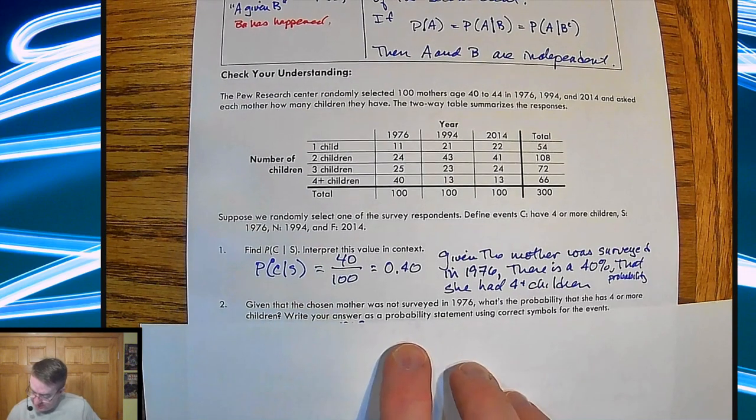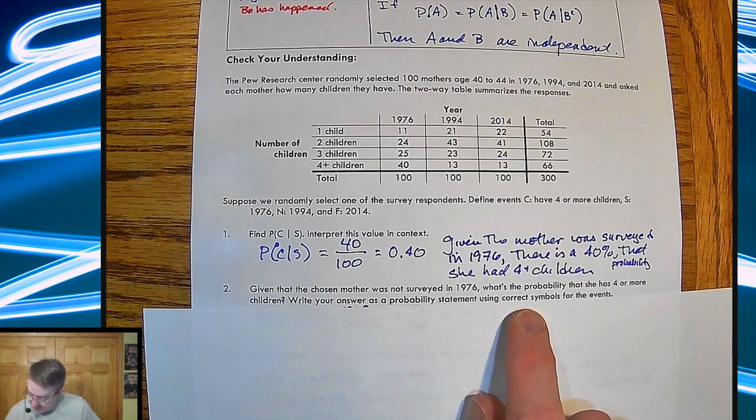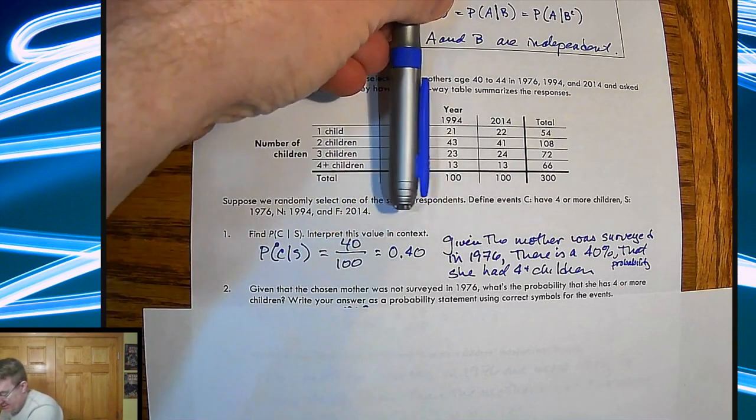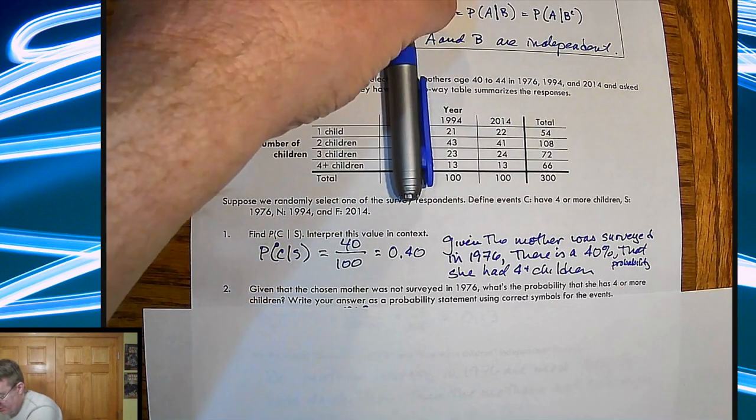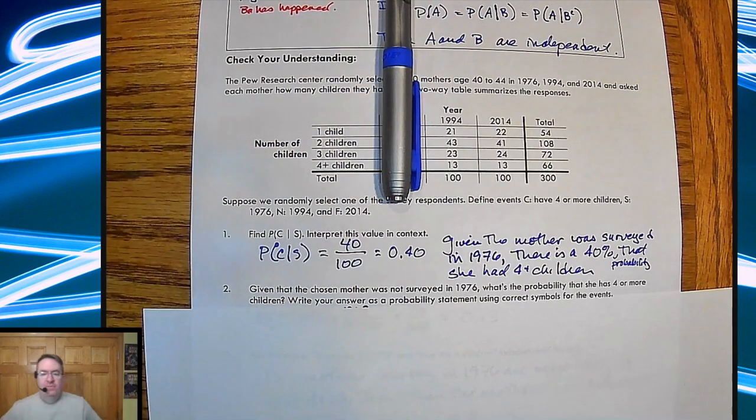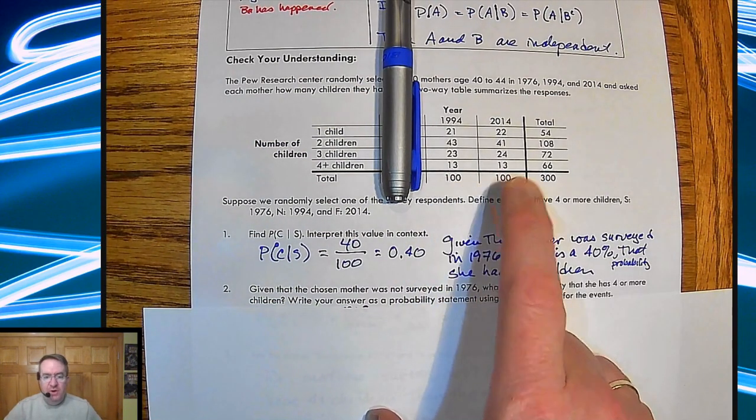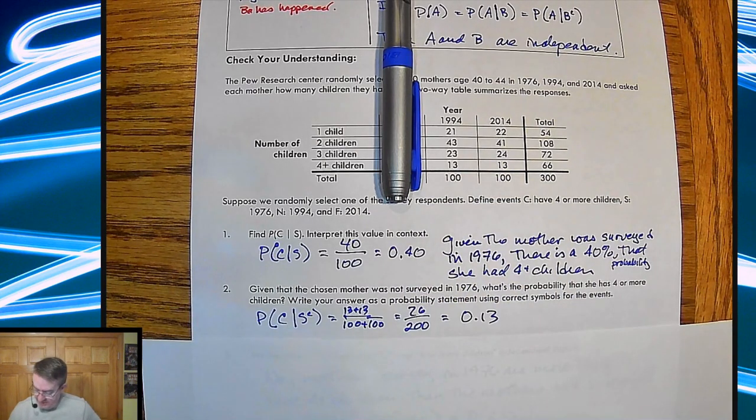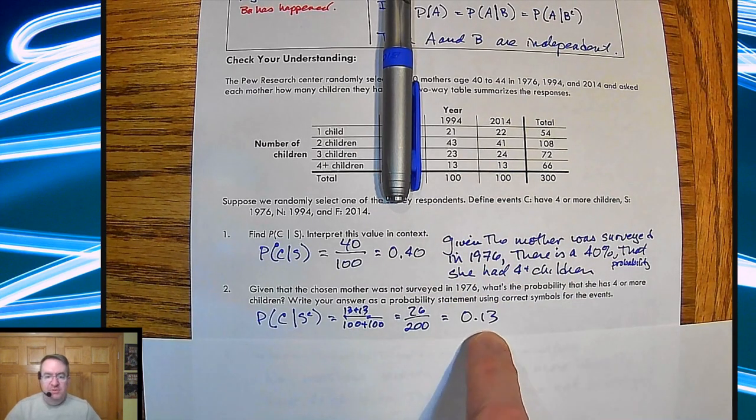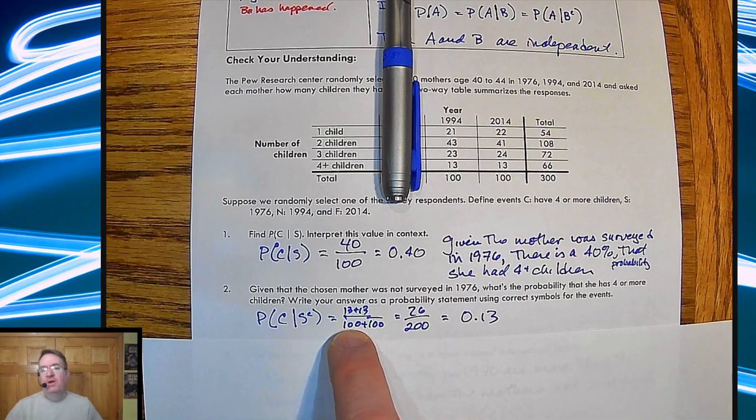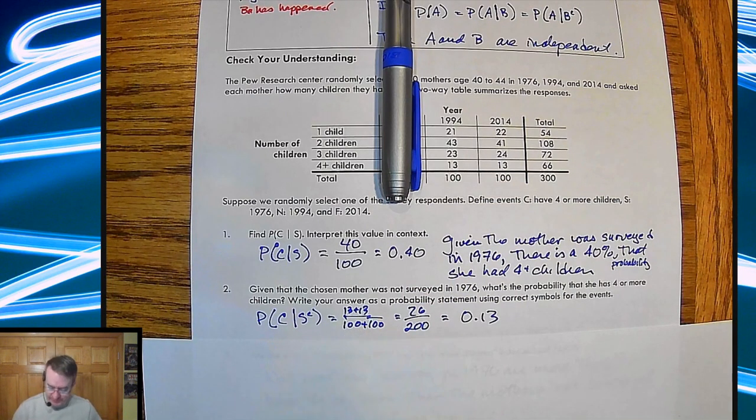Given that the chosen mother was not surveyed in 1976, what is the probability she has four or more children? So that means not in 1976. So that means we're going to take the other two years here. So that means I'm going to total up 13 and 13 out of 200, and I get that. So when you do that, you get 13%. Again, you do have to total this up beforehand. So we're doing it at 200.